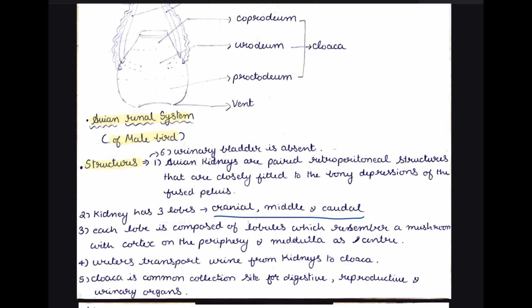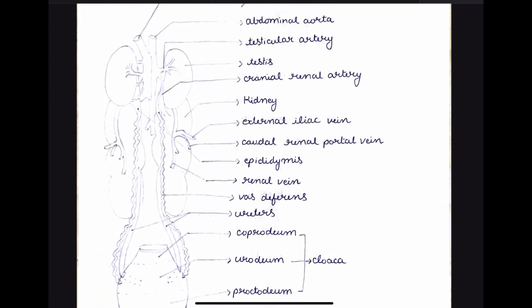To summarize the structure of the avian renal system: we have paired retroperitoneal kidneys with three lobes — cranial, middle, and caudal. Each lobe has lobules divided into a cortex on the periphery and medulla in the center. Ureters transport urine from the kidney to the cloaca, which is the common collection site for digestive, reproductive, and urinary organs.